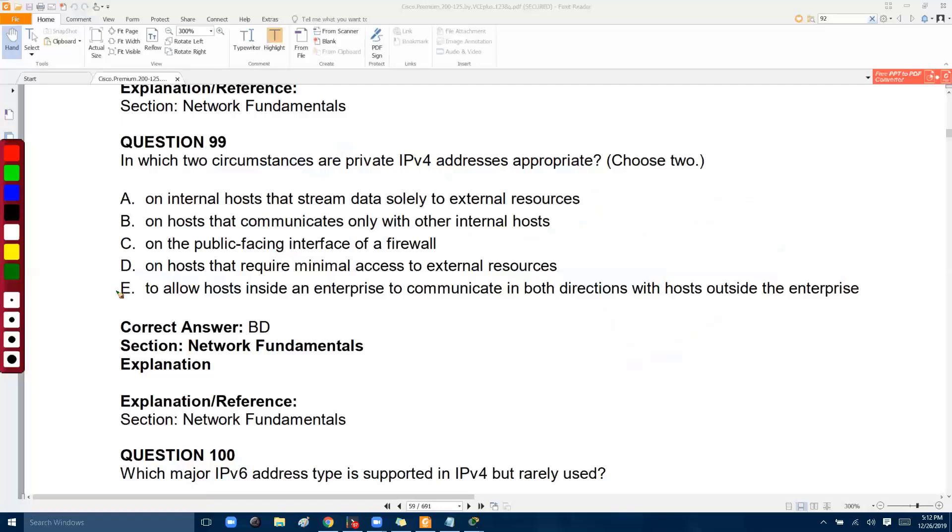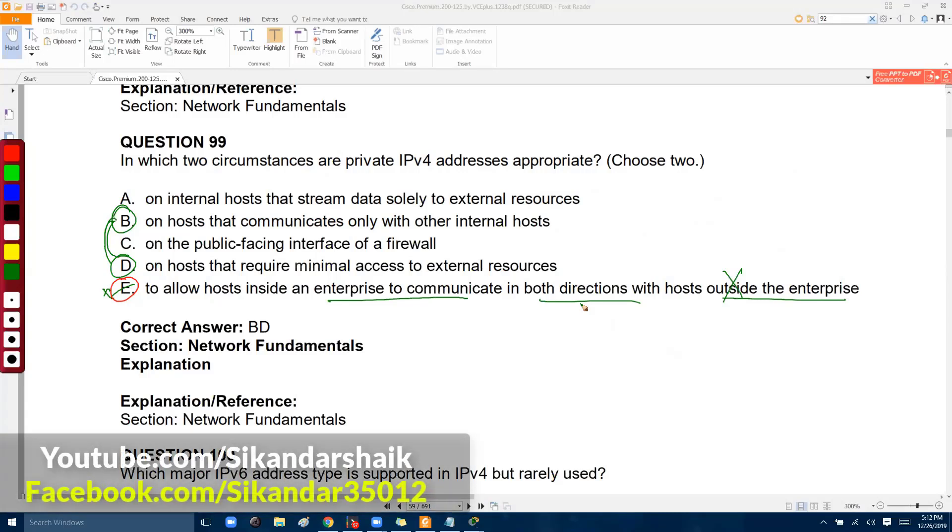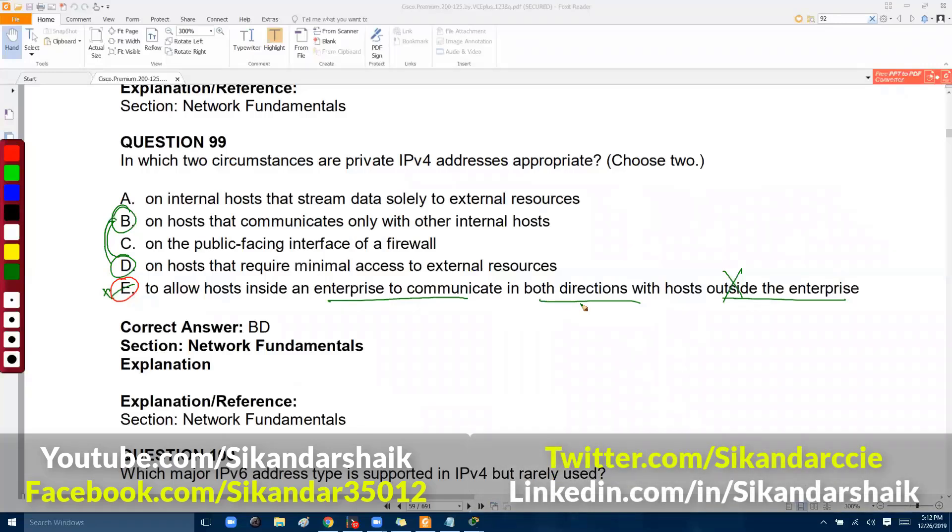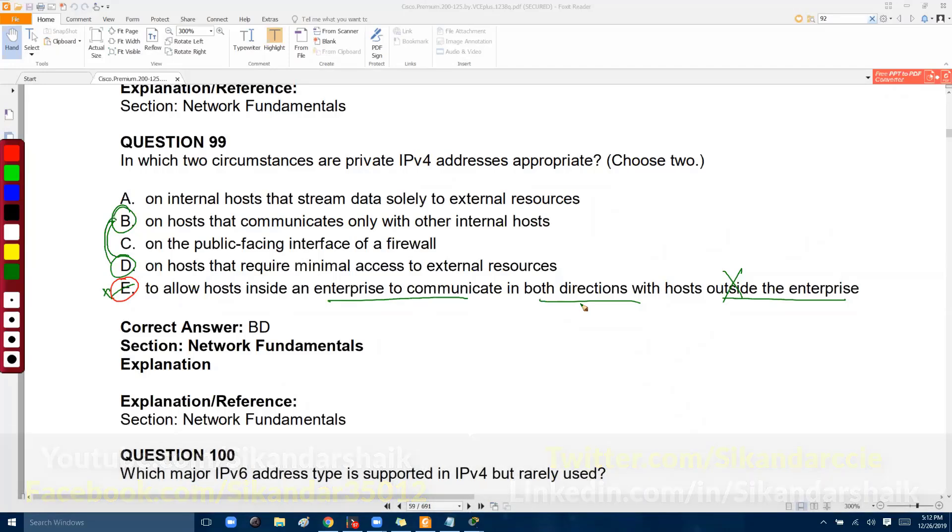Finally, these are your right answers as you can see. But you need to figure out the wrong answers as well. For example, to allow hosts in the enterprise network to communicate in both directions with hosts outside - that's not correct because private addresses cannot be used to communicate outside the enterprise. Outside enterprise means internet or any other company network, because there might be overlapping of those addresses.